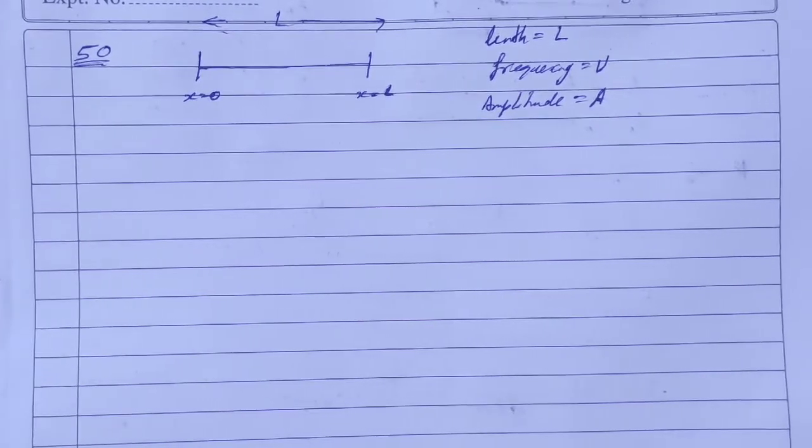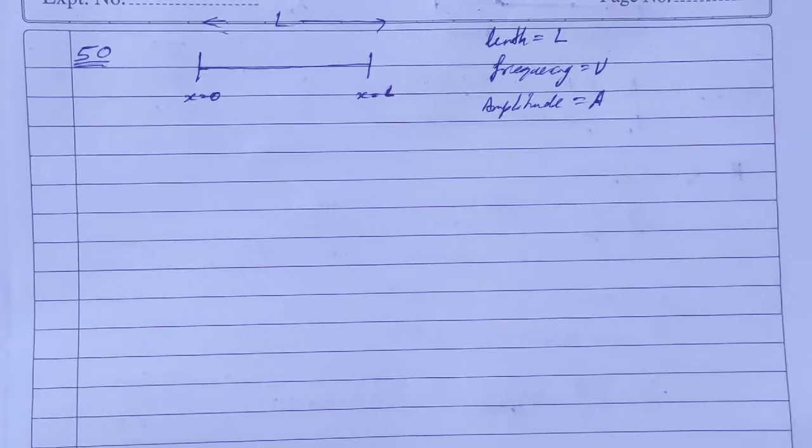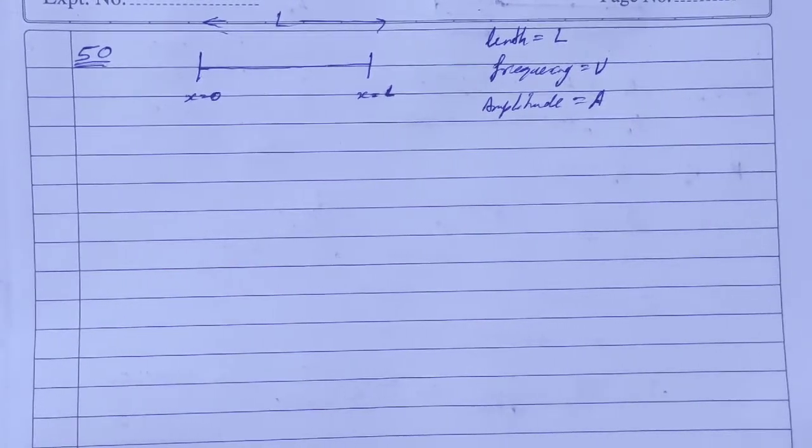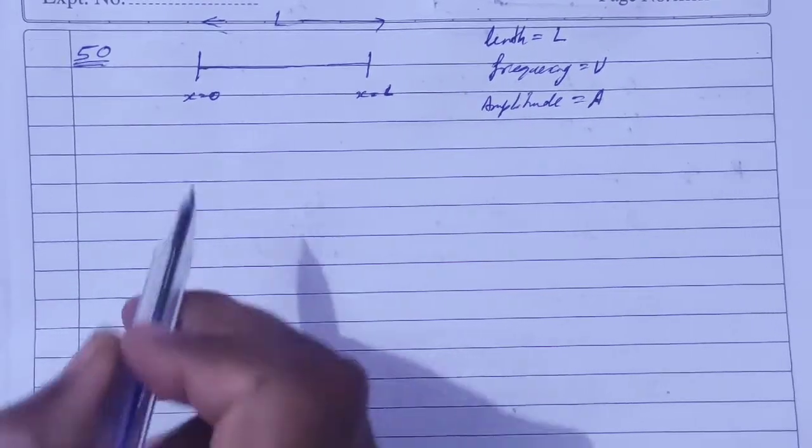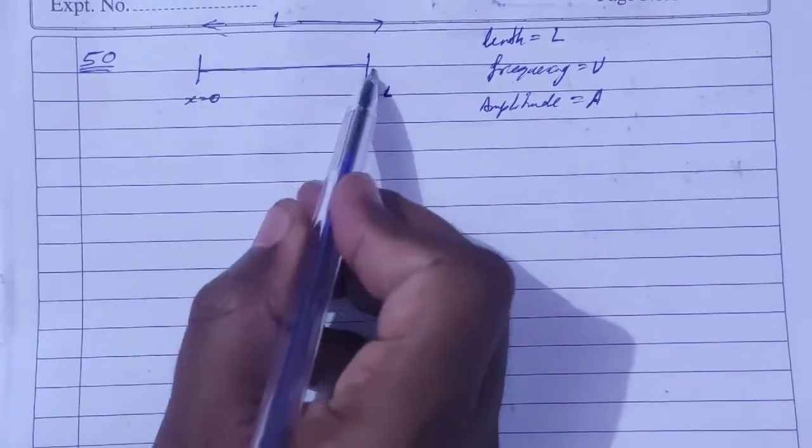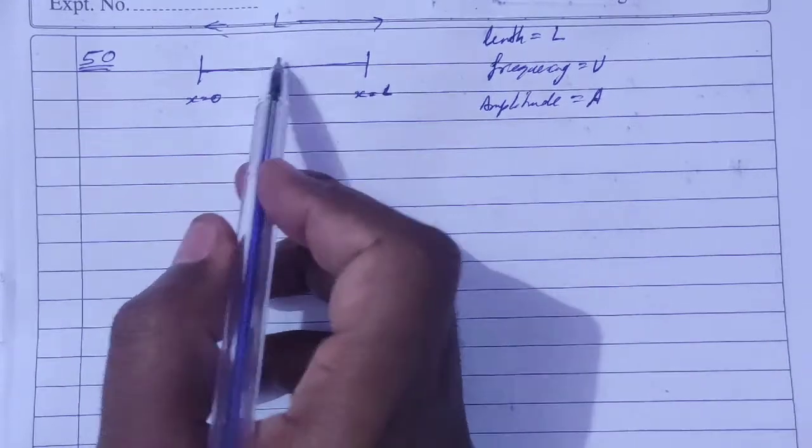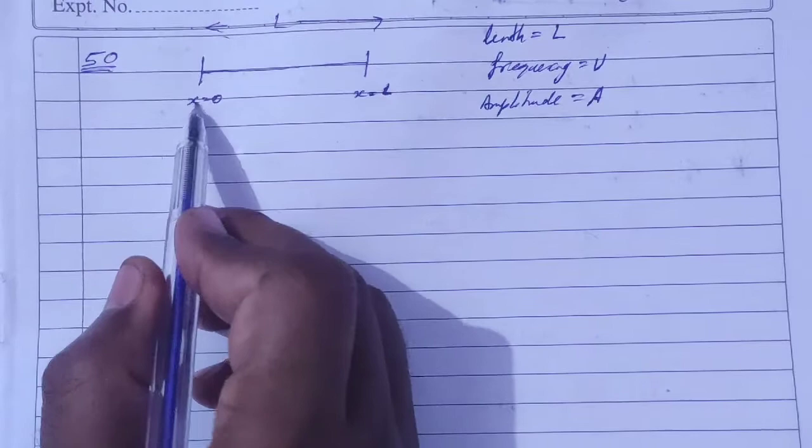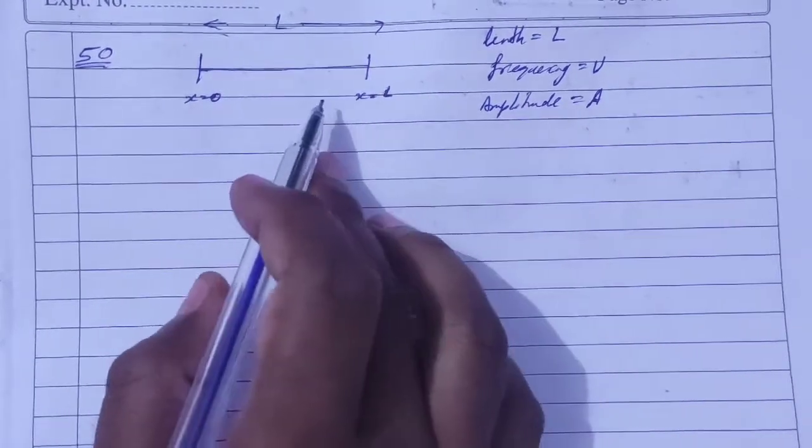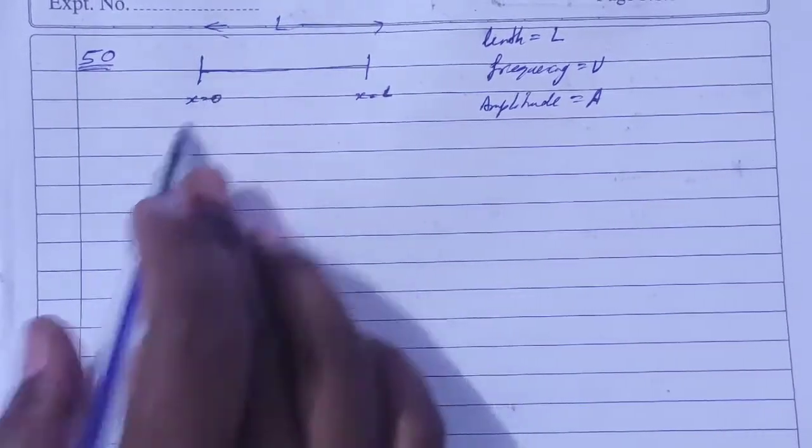So inside this we have two questions. In one question we are asked what is wavelength and wave number. In the other question we are asked what is the standing wave equation. We are given that this wire, both ends are fixed, length is capital L, frequency nu, amplitude A, and initial point x equals 0 and final point x equals L. This is the fundamental mode of vibration.